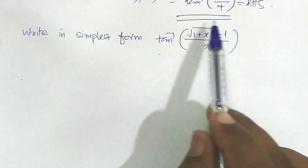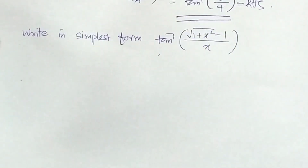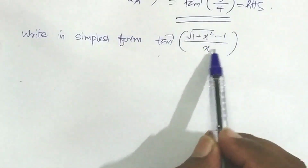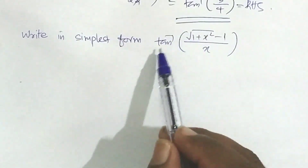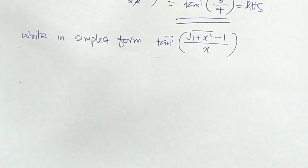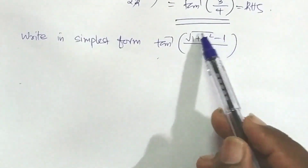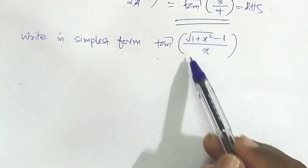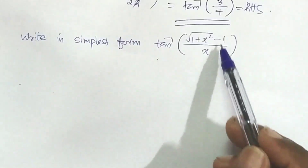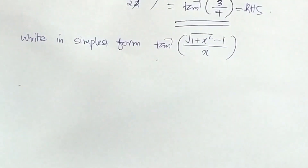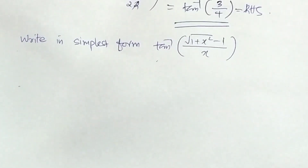If there is a trigonometric function inside the inverse, we can use substitution. If we have tan inverse containing a trigonometric expression, we substitute appropriately. You need to know how to choose the substitution for x.